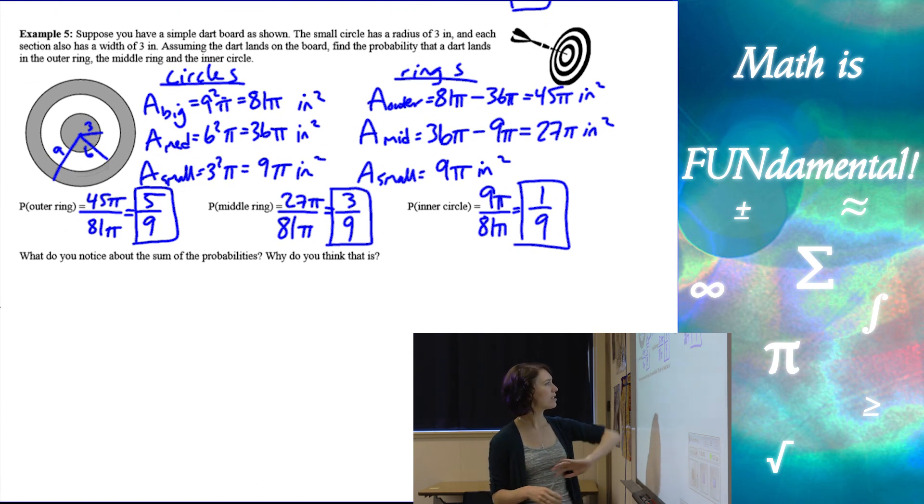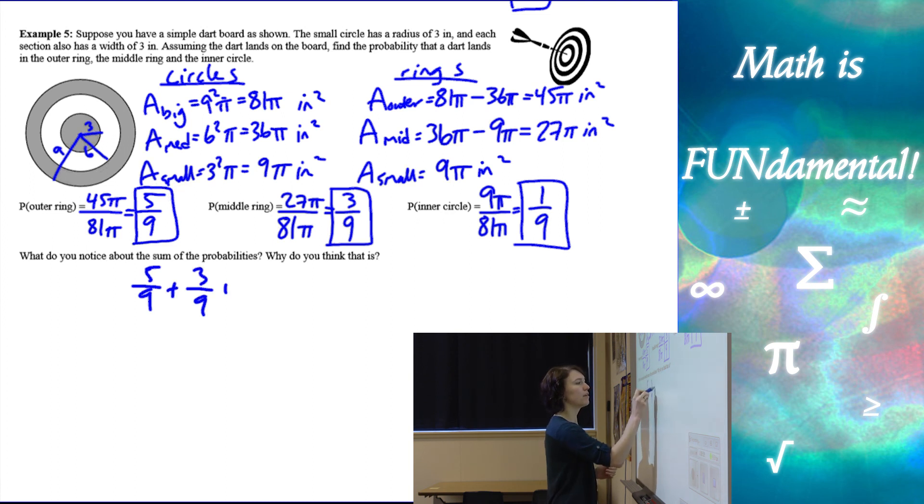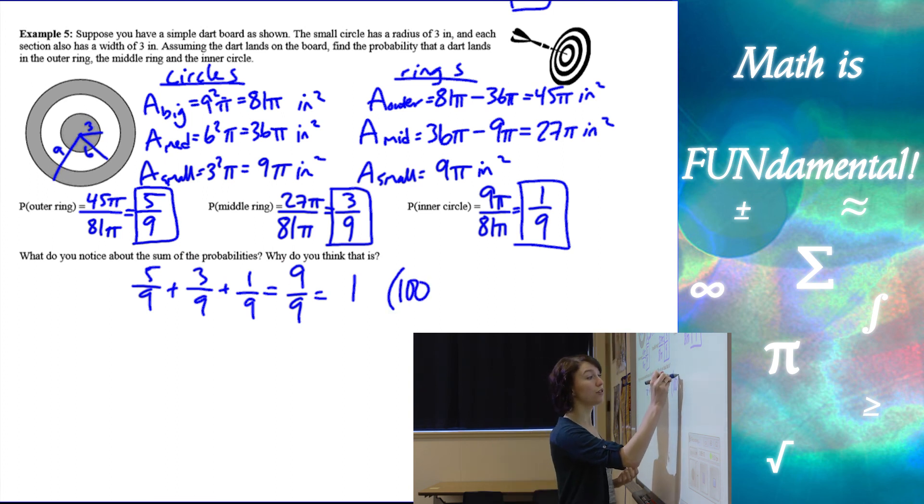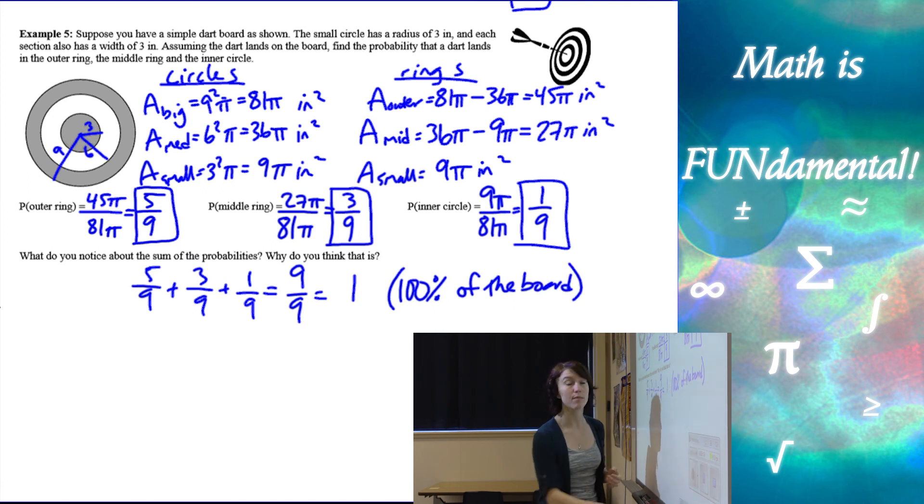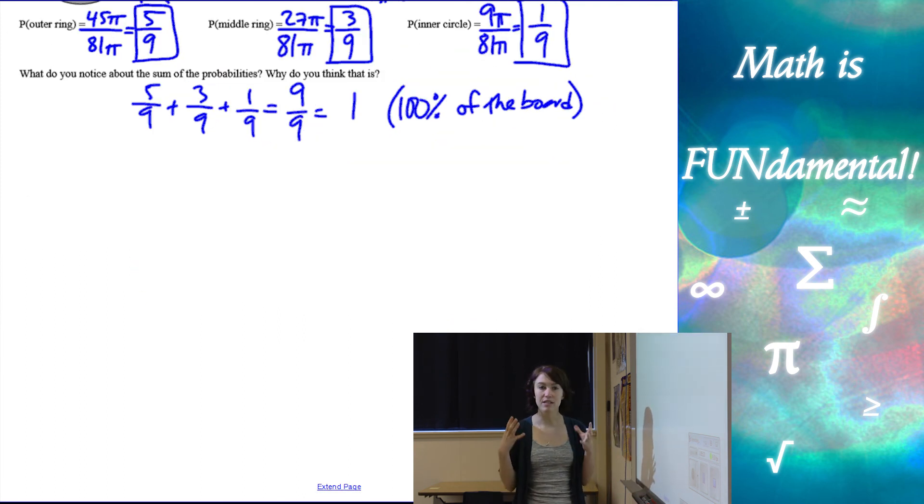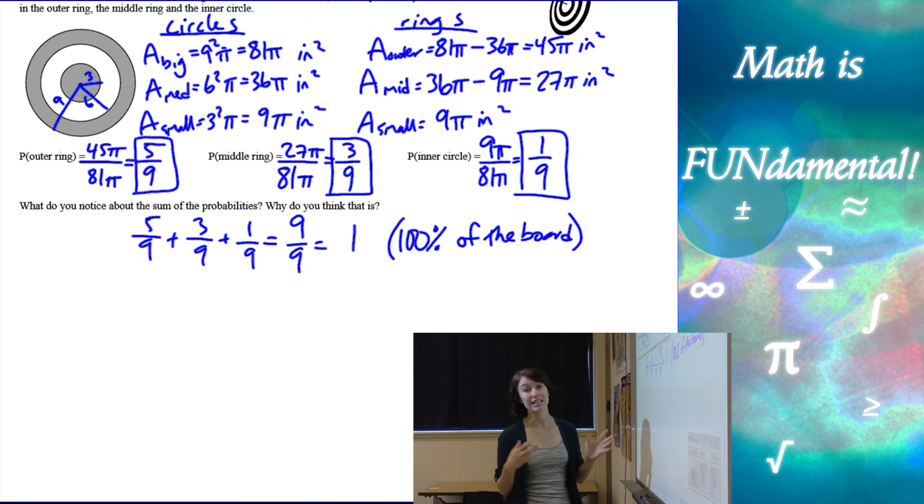Now, let's look at this. It asks us, what do you notice about the sum of the probabilities? If I take 5 9ths plus 3 9ths plus 1 9th, what do I get? Well, I get 9 9ths, which is 1. And the reason that we end up with 1 when we add these all together is because if I take the outer ring, the middle ring and the inner circle, and I put them all together, I get the entire board. So this is 100% of the board, which is why it's 1. So remember, when you're doing probabilities and you end up with probabilities that all add up to the entire figure, we want to make sure that we did it correctly, check to make sure all your probabilities add up to 100%.